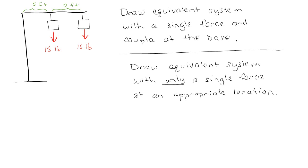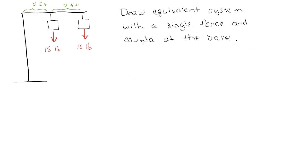Now let's assume you have an idea of what we're doing, or maybe you're not sure yet. Here's a typical kind of problem. We're going to draw an equivalent system with a single force and couple either at the base of the pole, or a single force at an appropriate location. Pause the video and try to work through this on your own — figure out the sum of forces in the y, the moment about the base. The sum of the forces is clearly going to be 30.